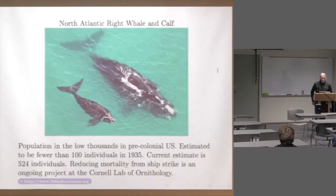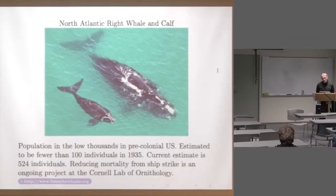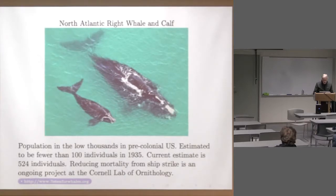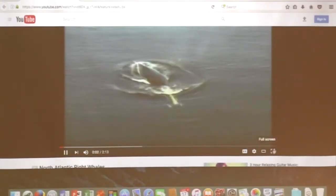The North Atlantic right whale has a connection to the Cornell Lab of Ornithology. Its population was perhaps as low as 100 or fewer individuals in 1935. The right whale was called the right whale because it was the best whale to hunt in colonial America — it migrated close to shore, didn't swim very fast, and when killed it would float. The current estimate is about 524 individuals. Here's a video from the Cornell Lab about the North Atlantic right whale.